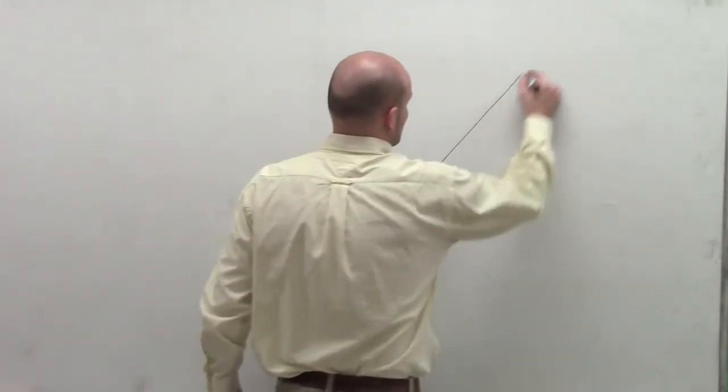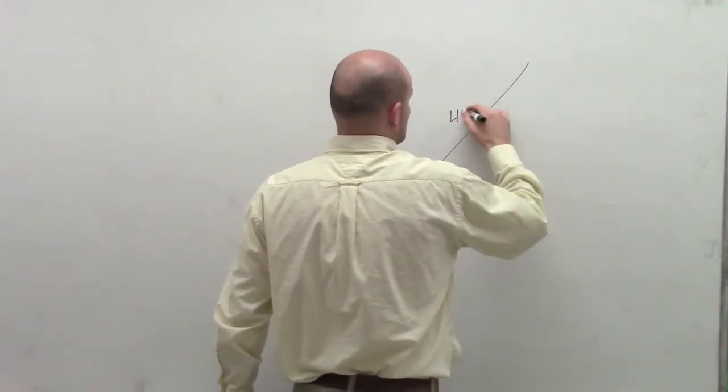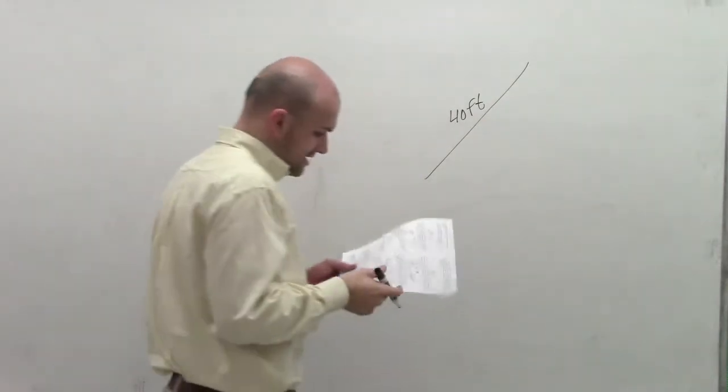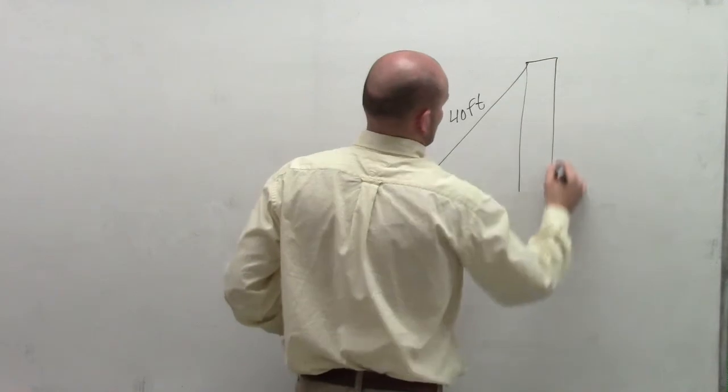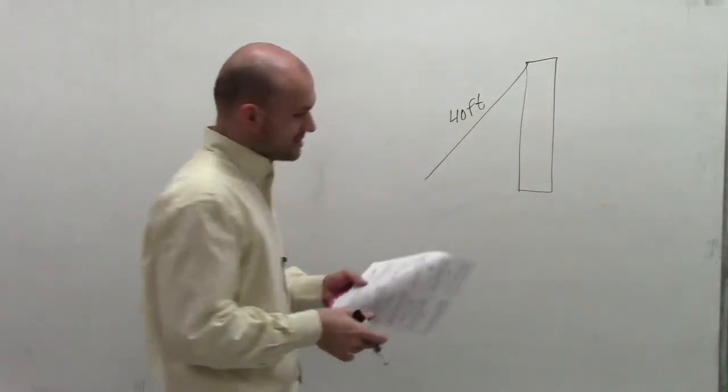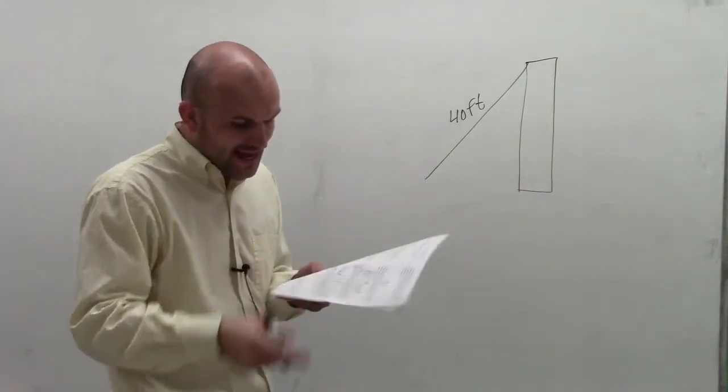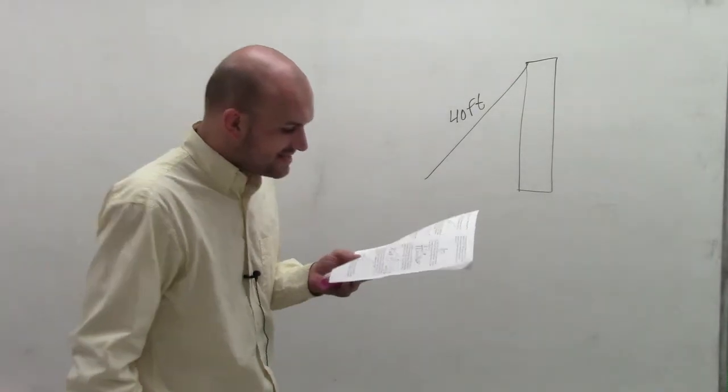So it says a 40-foot extension ladder, right? That means my extension ladder, the distance of it, is going to be 40 feet. And it says it leans up against the side of a building. So it's going to lean up the side of the building, and we need to find the distance h up the side of the building.